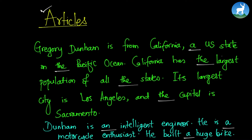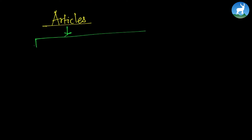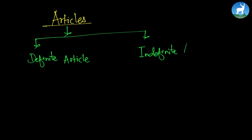Articles are words like a and the. So these little things are called articles. Words like a, an, and the are called articles. There are two kinds of articles: the first one is called the definite article, and the second one is called the indefinite article.